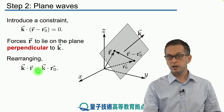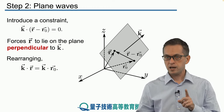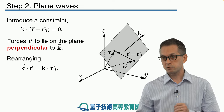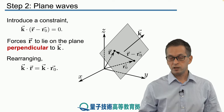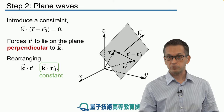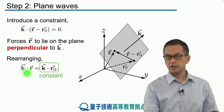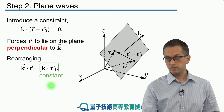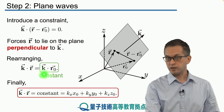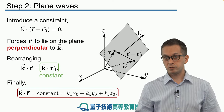We can rearrange this as: k · r = k · r0. Since k is fixed (it describes our traveling wave) and r0 is a fixed chosen point on the plane, the only variable is r. So the mathematical description of a plane is: for any point r on the plane, k · r must equal the constant k · r0, which is kx·x0 + ky·y0 + kz·z0.